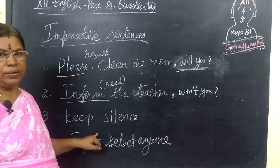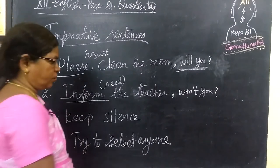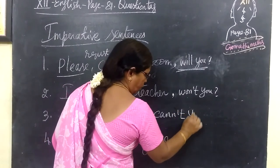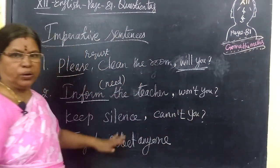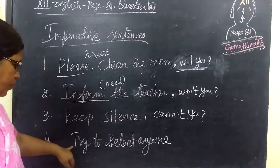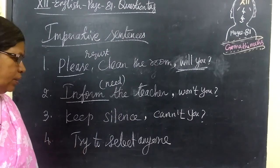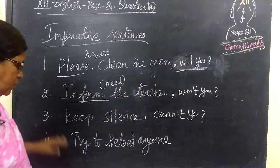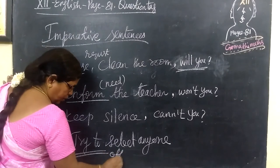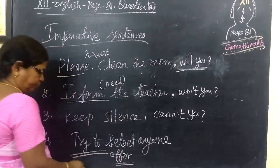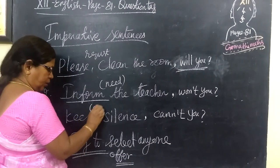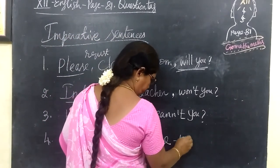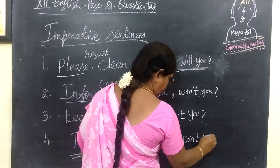Then 'Keep silence' — the teacher is ordering: keep silence. So here you use: can't you? Keep silence, can't you? Then 'Try to select anyone method or book' — this is in offer form. So here also you write: won't you? Try that, won't you?